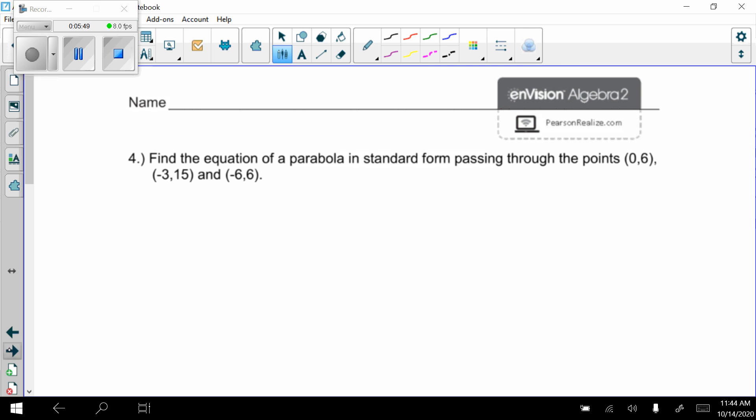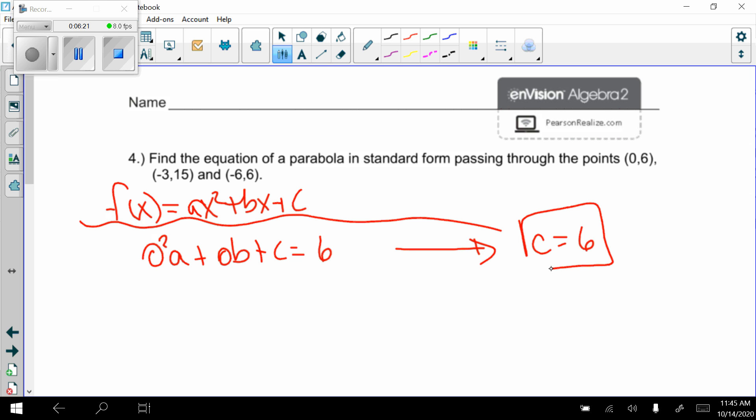Let's go to the back. Find the equation of a parabola in standard form. Remember, standard form looks like f of x equals ax squared plus bx plus c. Passes through the points. So remember, this is where we take each point and we plug in for x and y. So if I take the point 0, 6, I have 0 squared times a plus 0b plus c equals 6. So that turns into c equals 6. Isn't that nice? I already have one of my answers.